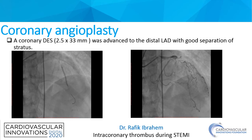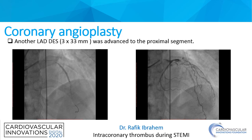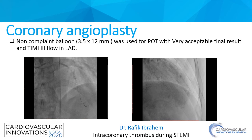We used a coronary drug-eluting stent 2.5 by 33 mm advanced to the distal LAD with good separation of struts. Another drug-eluting stent 3 by 33 mm was advanced to the proximal segment. Then a non-compliant balloon 3.5 by 12 mm was used for POT, with a very acceptable final result and TIMI 3 flow in the LAD.